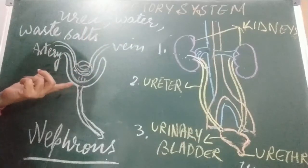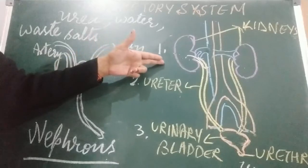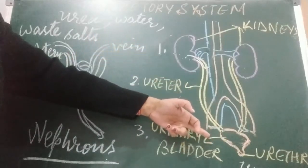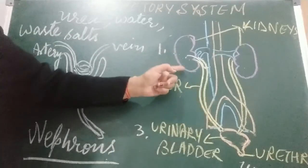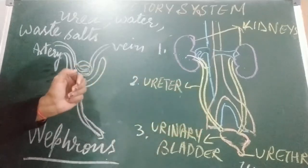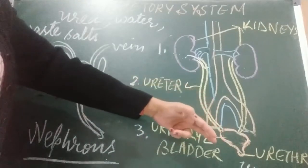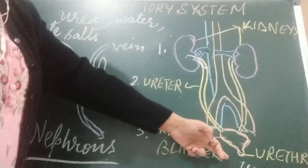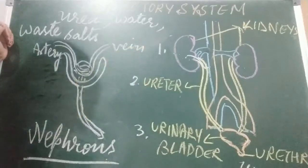The urine formed in the kidneys goes into the urinary bladder through tubes called ureters — those yellow tubes you can see. Urine is stored in the urinary bladder and is passed out from the body at regular intervals through the urethra.